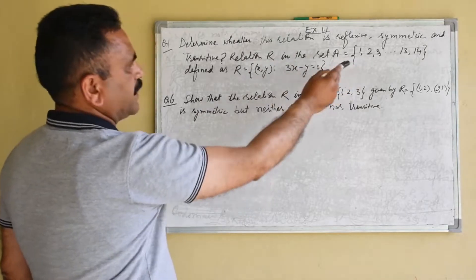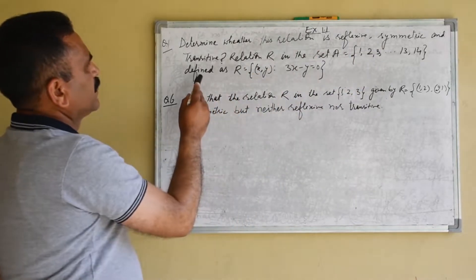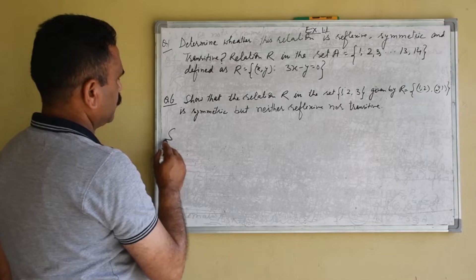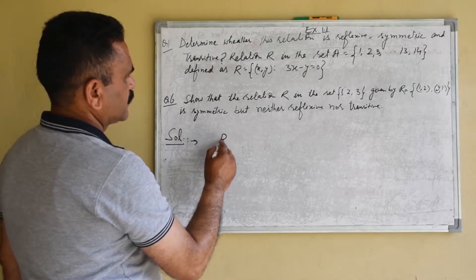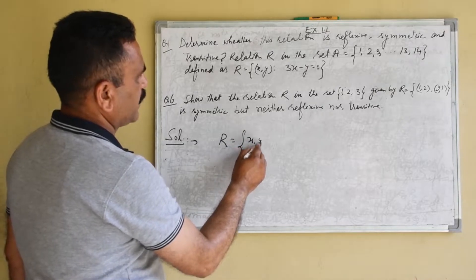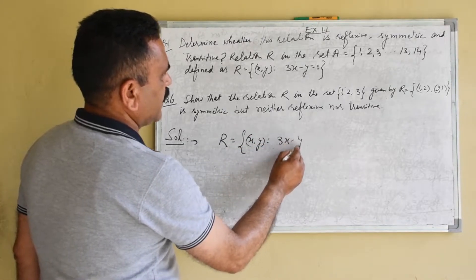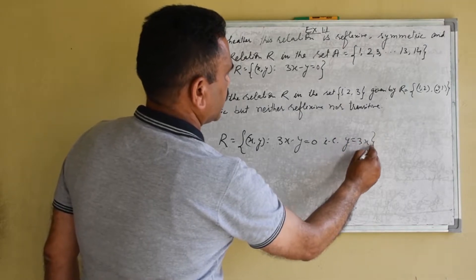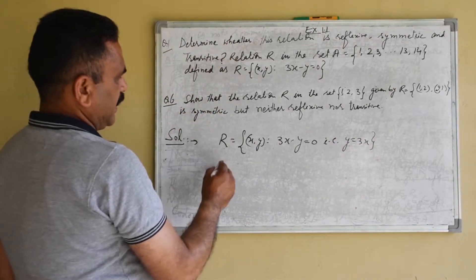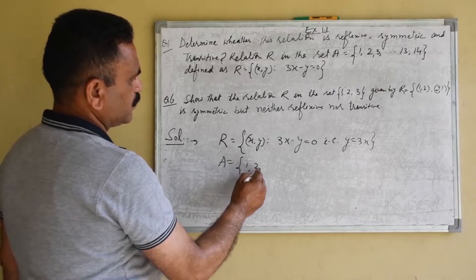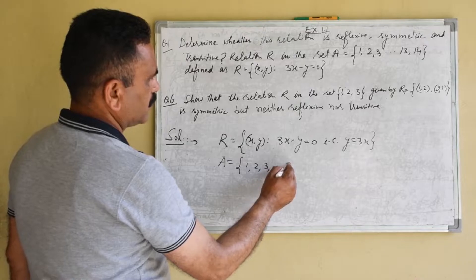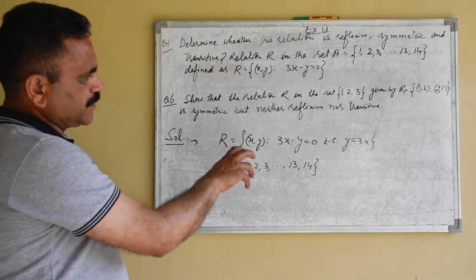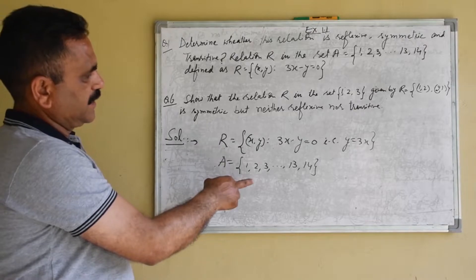The relation R is in the set A, which is {1, 2, ..., 14}, defined as (x, y) such that 3x minus y equals 0. So R = {(x, y) such that 3x - y = 0}, that is y = 3x. The set A is {1, 2, 3, ..., 13, 14}. So it is easy to understand — first we write this relation R in roster form.